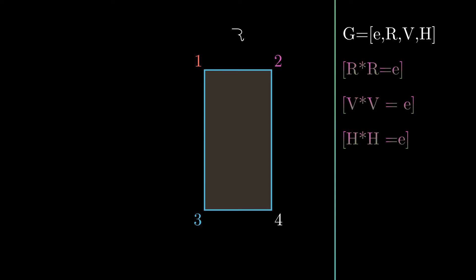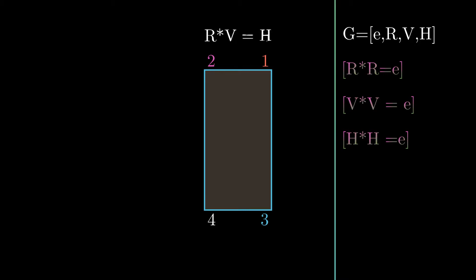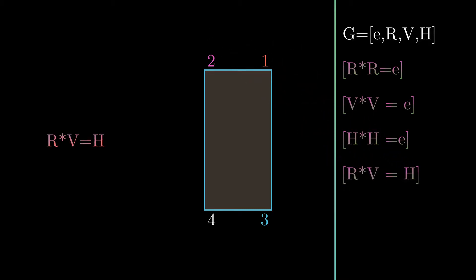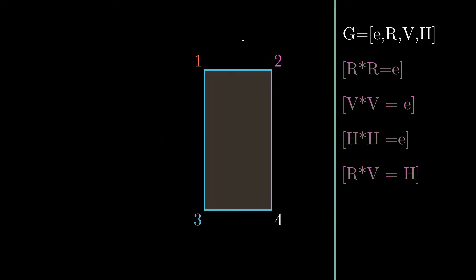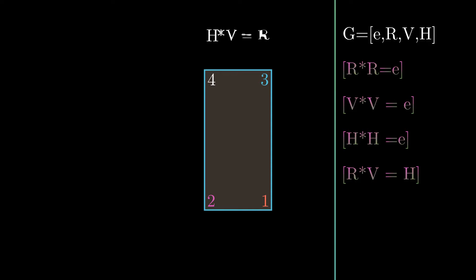For finding other properties, let's take R — the 180-degree rotation — and then flip along the vertical axis, big V. You can carefully observe that the final image is nothing but big H, the horizontal flip. Also, starting from H and applying V — that is, H star V — we get R, the 180-degree rotation.